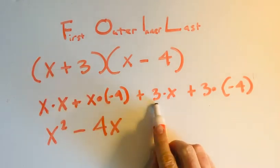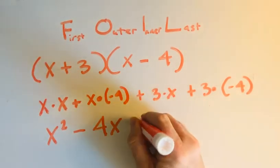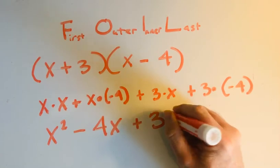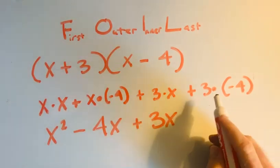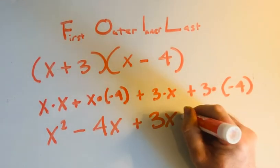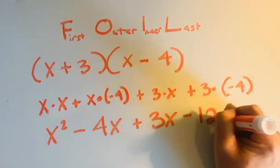And then I have plus 3 times x, well that's 3x, so plus 3x. And then over here I have 3 times negative 4, and that's negative 12.